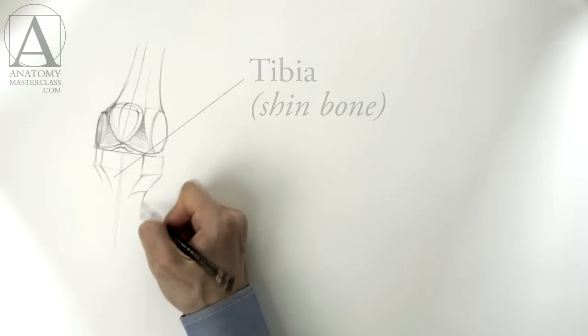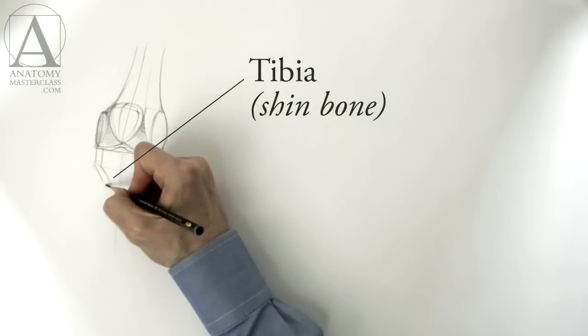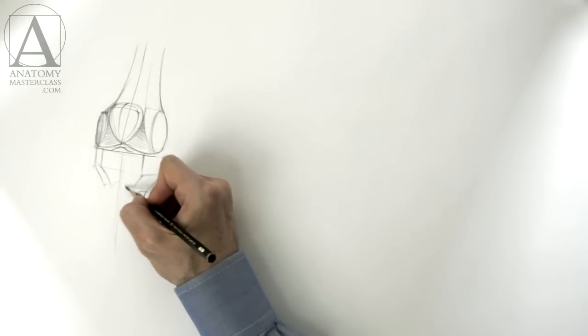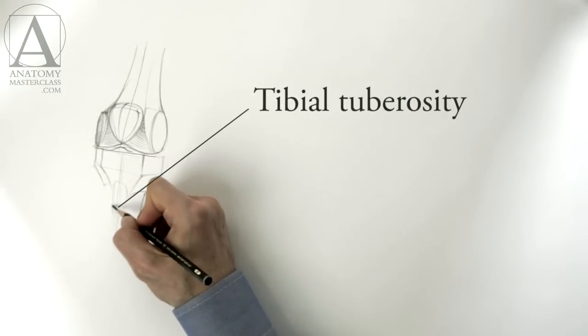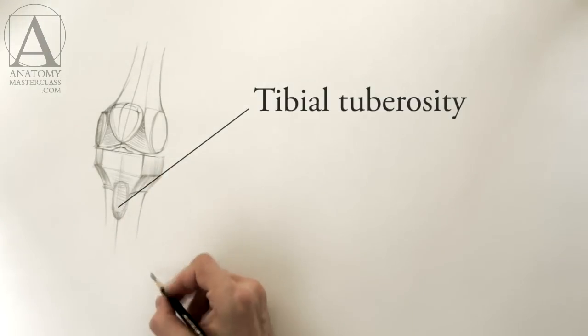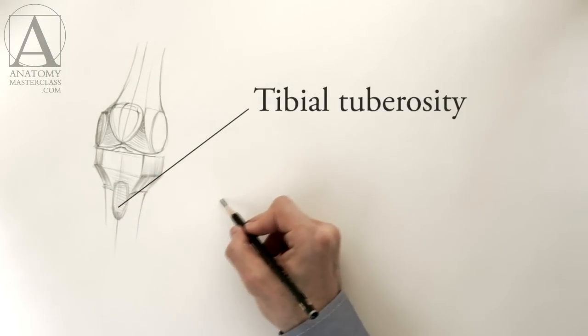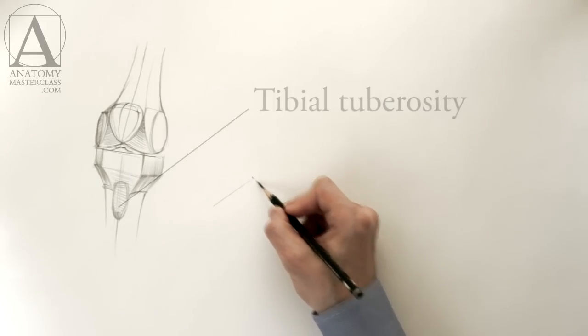Another bone of the knee joint is called the tibia. This is the shin bone. Here is the bony projection of that bone. It's called the tibial tuberosity. This is the place where the muscle of the upper leg quadriceps connects to the lower leg bone.